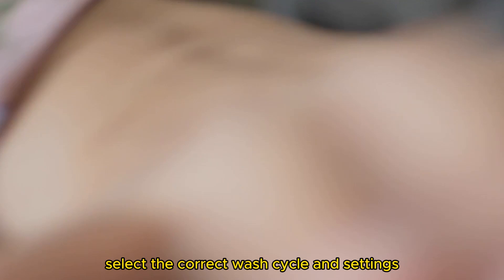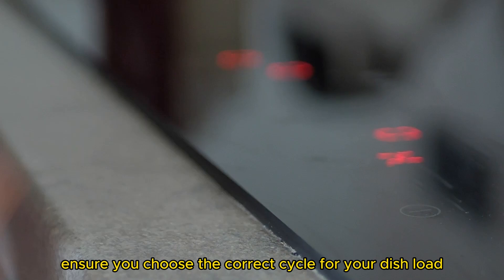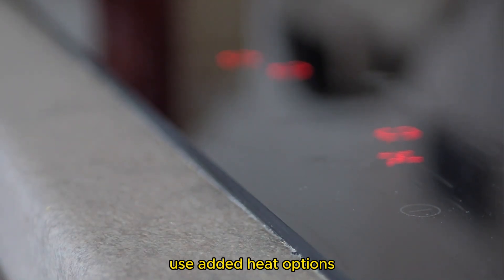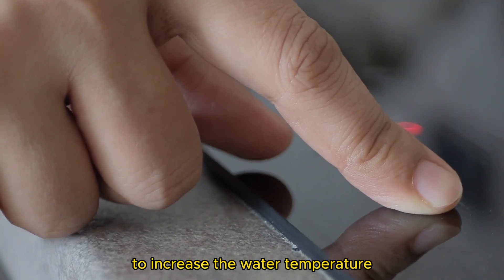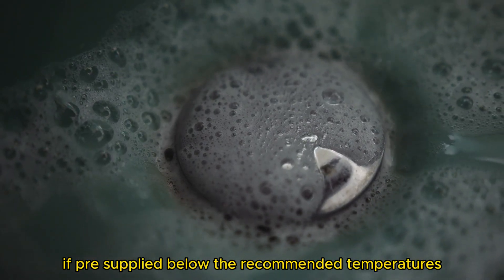Select the correct wash cycle and settings. Ensure you choose the correct cycle for your dish load. Use added heat options to increase the water temperature inside the washer if pre-supplied below the recommended temperatures.